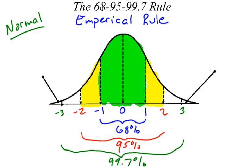So the 68, 95, 99.7 rule says that about 68% of the data falls between one standard deviation above and one standard deviation below the mean. About 95% of the data lies between two standard deviations below and two standard deviations above the mean. And finally, about 99.7% of the data falls between three and negative three for our z-scores, or three standard deviations above and three standard deviations below the mean.